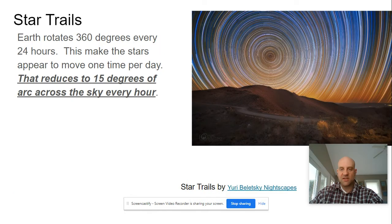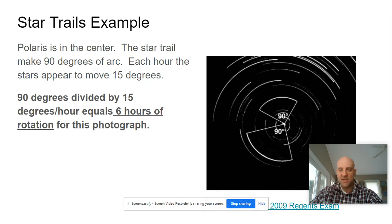One of the skills that we would like you to have is to be able to take a look at star trails and determine how many hours a camera lens was held open. In this example, you have an arc of 90 degrees across the sky. If you divide that arc of 90 degrees by 15 degrees per hour, that means that the camera lens here was held open for six hours.